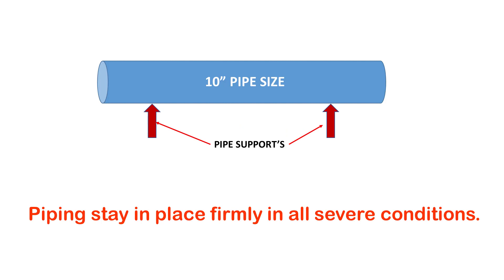Piping is generally subjected to various severe conditions such as high temperature, high pressure, wind loads, seismic loads and vibrations, and various other forces and loads. These loads and forces can really cause serious damage to the piping system if not handled properly. So to protect the piping system, piping supports are provided.